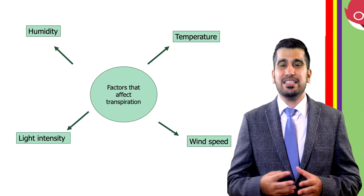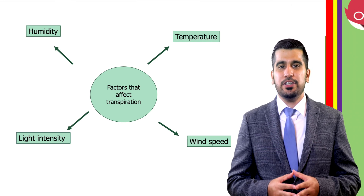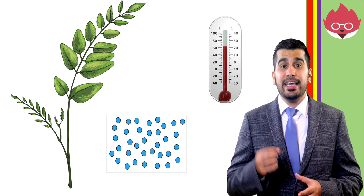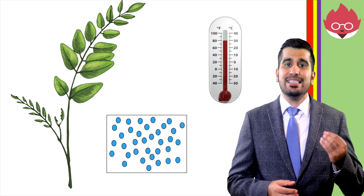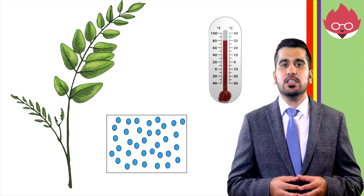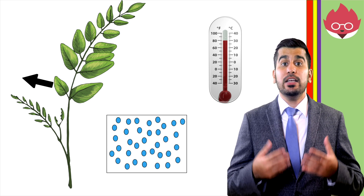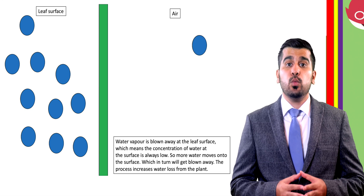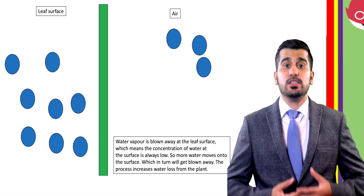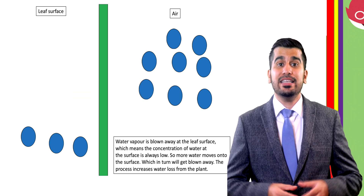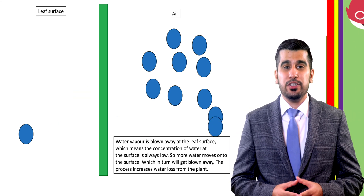There are four factors that affect the rate of transpiration. The first is temperature — an increase in temperature increases the rate of diffusion. As the temperature increases, so does the kinetic energy, causing water to evaporate more quickly from the leaf, increasing the rate of transpiration. The next factor is wind speed. As the wind speed increases, the rate at which water is removed from the leaf surface also increases. This creates a steep concentration gradient, increasing the rate of transpiration.